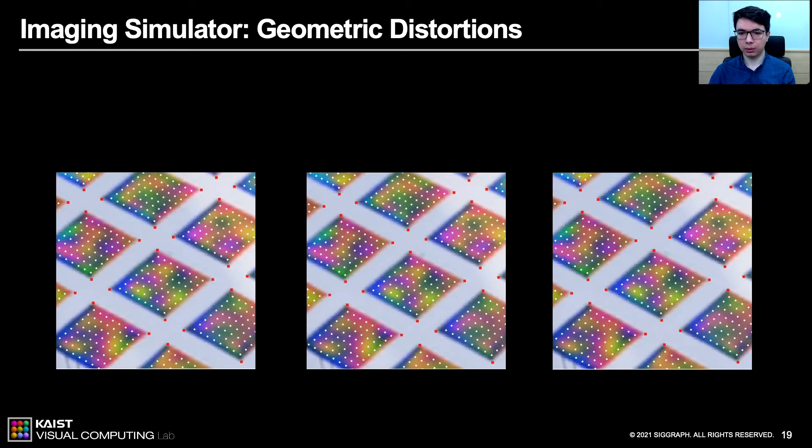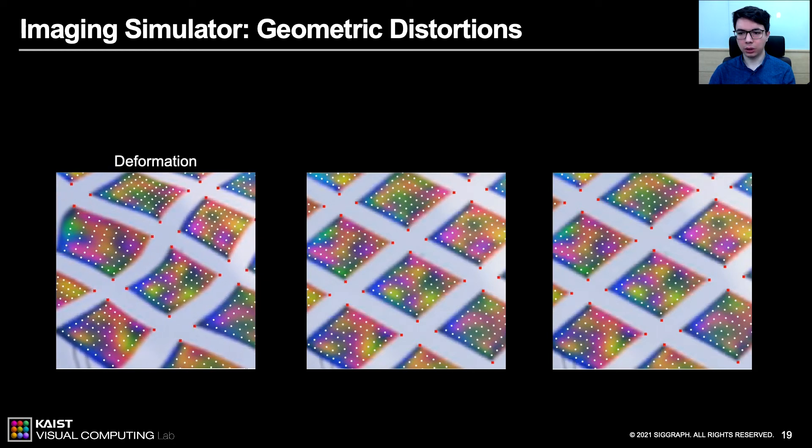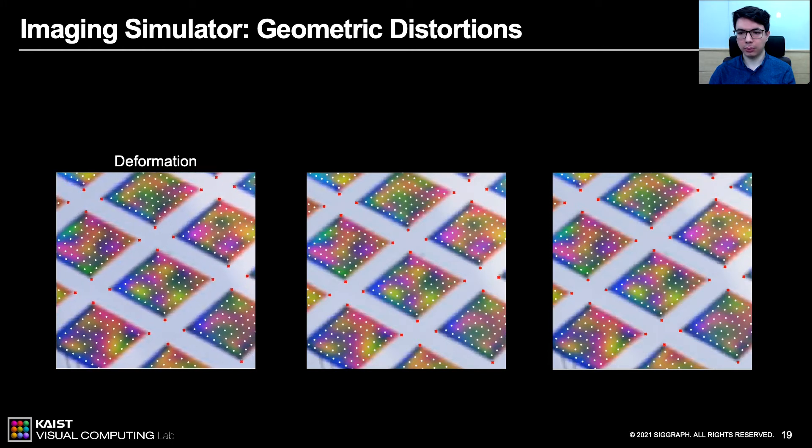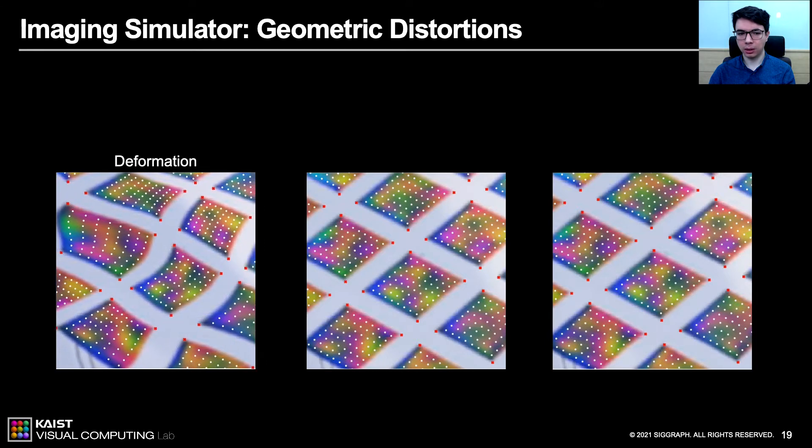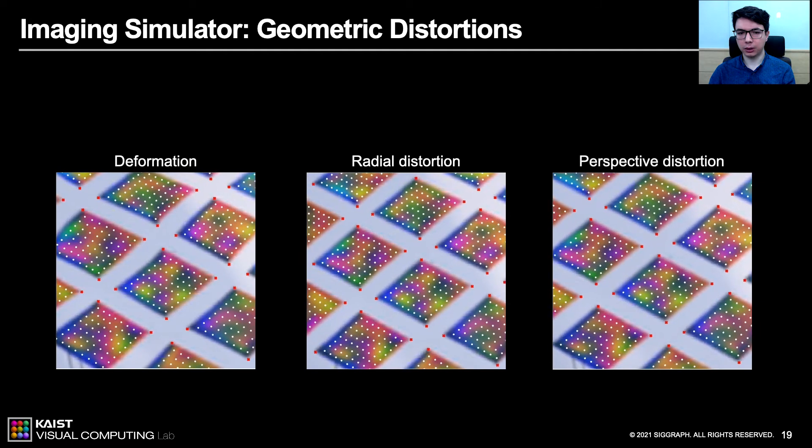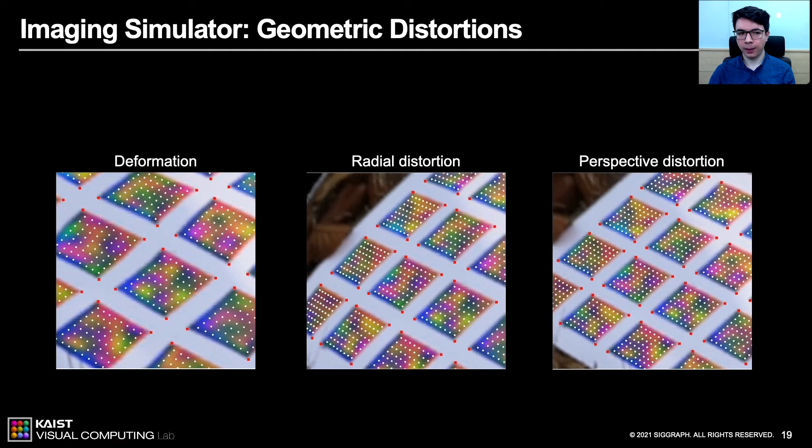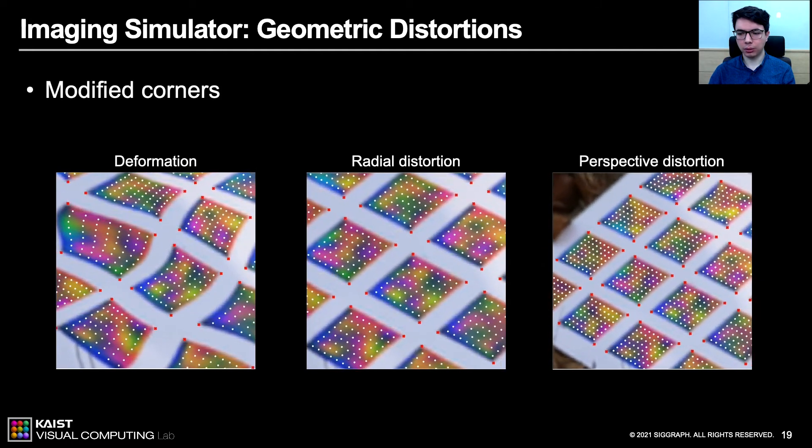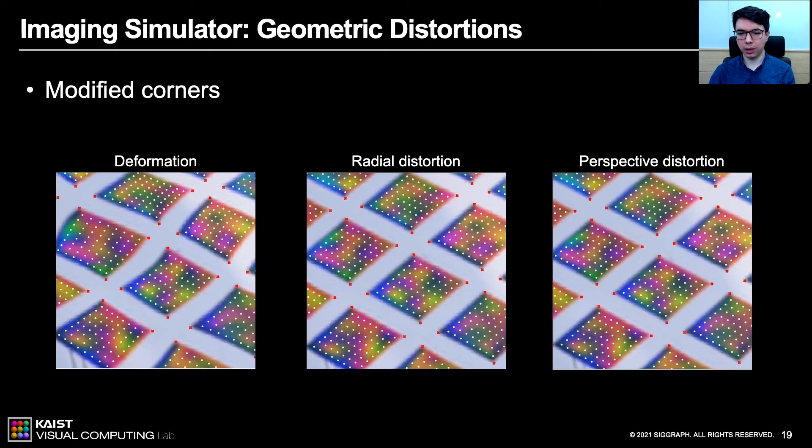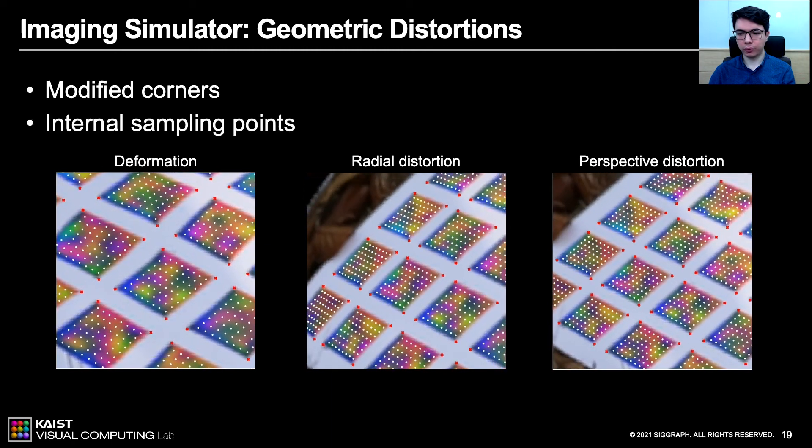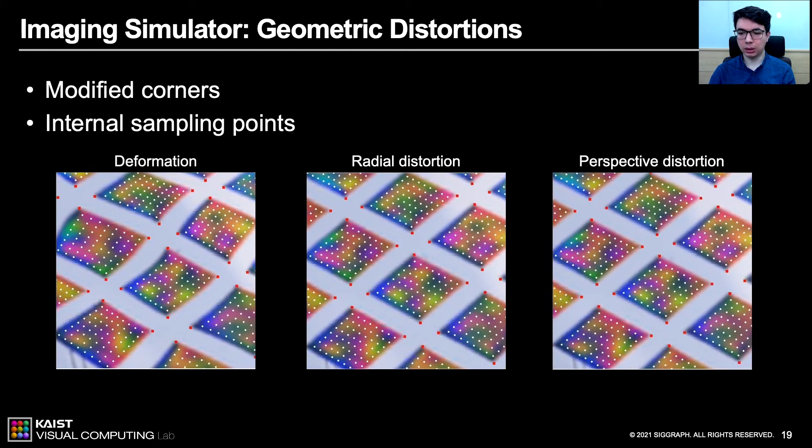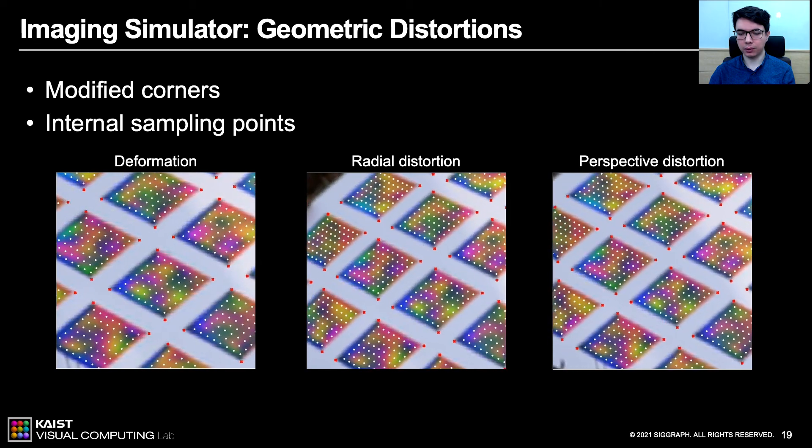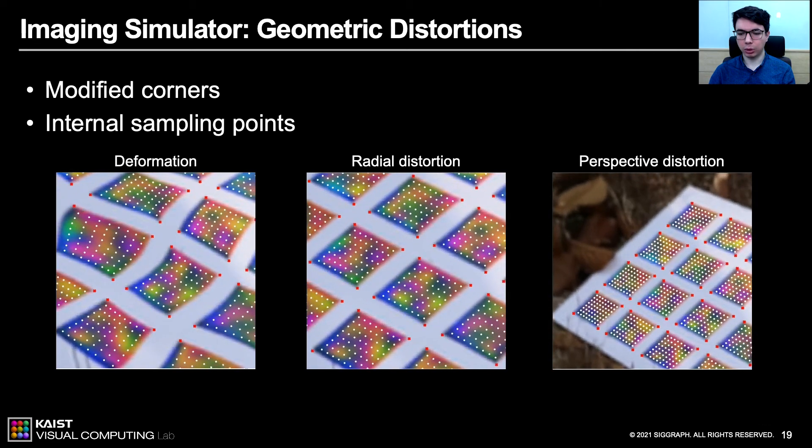Here is our geometric distortions. To simulate the deformation, we use thin plate splines to warp images in random shapes. We chose to algorithmically warp the markers to avoid bias against certain shapes. We also applied radial and perspective distortions. Another key point is, we need to recalculate ground truth labels, such as corners shown in the red. There are also white points shown within the marker area. These internal sampling points are used to teach the network how to invert non-linear transformations. Later, we will explain them in more detail.